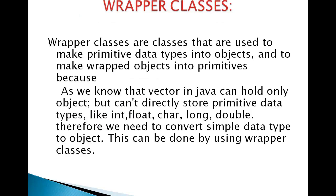Wrapper classes are classes that are used to make primitive data types into objects and to make wrapped objects into primitives because, as we know, the vector in Java can hold only objects but can't directly store primitive data types like int, float, char, long, double. Therefore, we need to convert simple data types to objects. This can be done using wrapper classes.